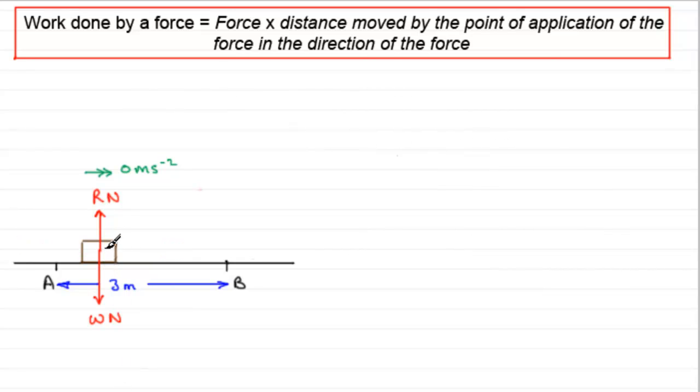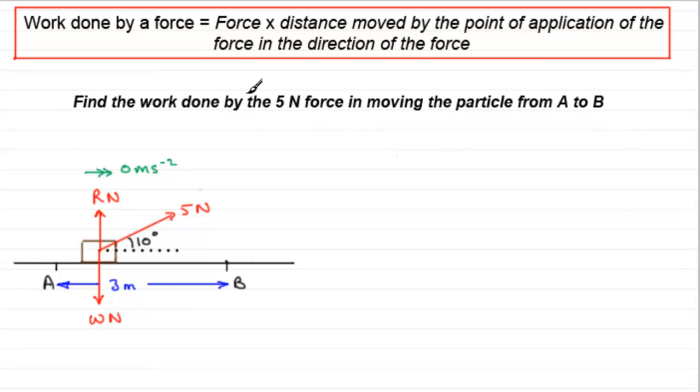Now suppose then we had our five newton force not acting to the right this time, but acting at an angle of 10 degrees to the horizontal. We'll just mark that in here. We'll just put a dotted line down through there and write that in as 10 degrees. So how do we work out then the work done by the five newton force in moving the particle from A to B? Well, to do questions like this, what we need to do is split the five newton force up into two components. Now that would be one in the direction along here of motion and one vertically upwards.